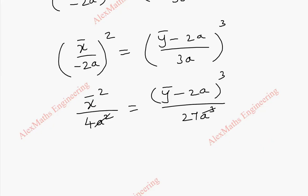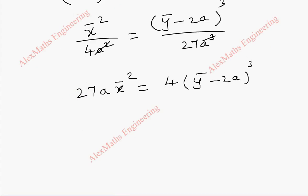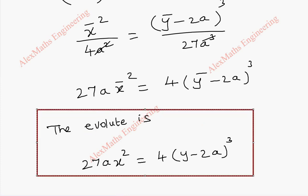Taking the square and cube individually for numerator and denominator: x-bar² by 4a² equals (y-bar minus 2a)³ by 27a³. We can cancel a², leaving 27a. By cross multiplication, we get 27a·x-bar² equals 4·(y-bar minus 2a)³. Replacing x-bar and y-bar with x and y, the evolute is 27ax² equals 4(y minus 2a)³. This is our required equation of the evolute.